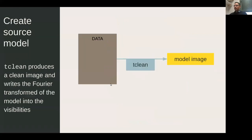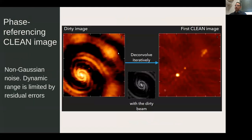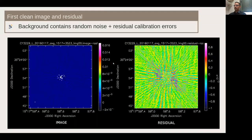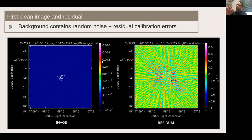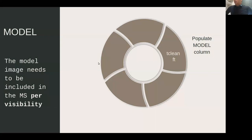In the tclean step, you get a model image from the data. This is an example: the dirty image, the dirty beam, and the first clean image where you can see the source structure much better than in the dirty image. However, the noise is not Gaussian — there are stripes — and this is not Gaussian noise. These stripes are like a convolution of a residual beam error with the source position, and we need to eliminate them.